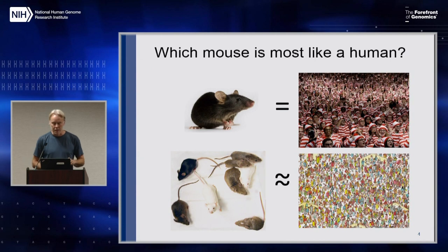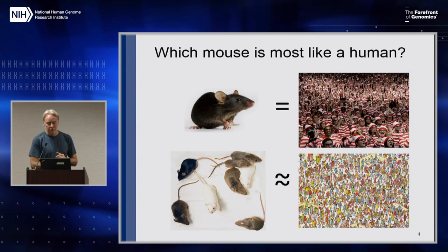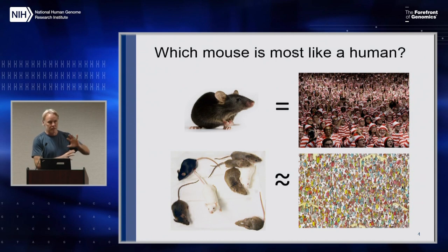And I always have the concern that even though it's very important to study C57 Black mice, you're really studying one mouse and one genome — it's a room full of Waldos.